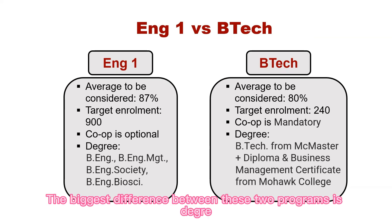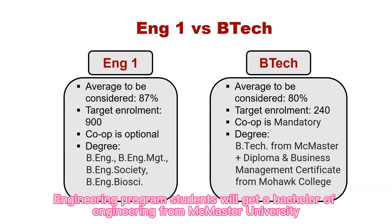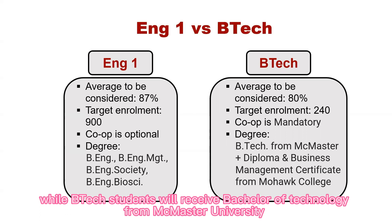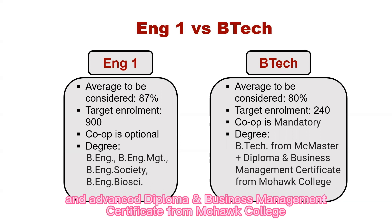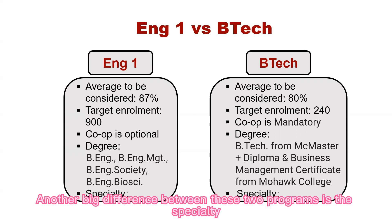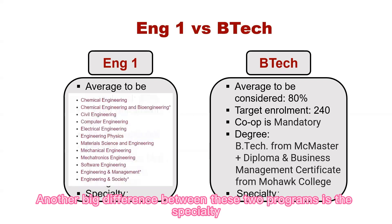The biggest difference between these two programs is the degree. Engineering program students will get a Bachelor of Engineering from McMaster University, while BTEC students will receive a Bachelor of Technology from McMaster University and an Advanced Diploma and Business Management Certificate from Mohawk College.